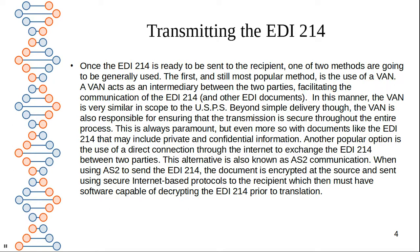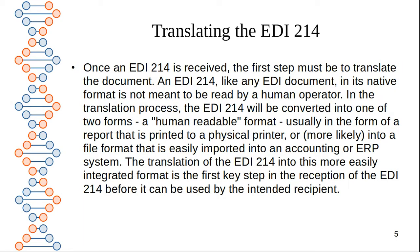Another popular option is the use of a direct connection through the internet to exchange the EDI 214 between two parties, or to include a trading partner as well. This alternative is known as AS2 communications, or Applicability Statement 2. When using AS2 to send the EDI 214, the document is encrypted at the source and sent using a secure internet-based protocol to the recipient.